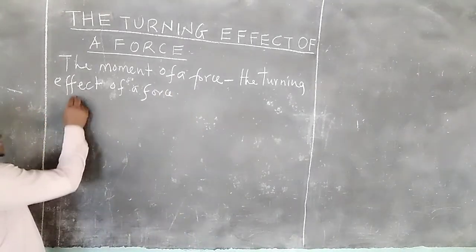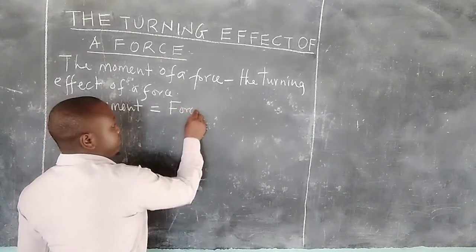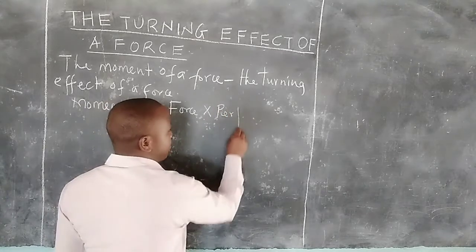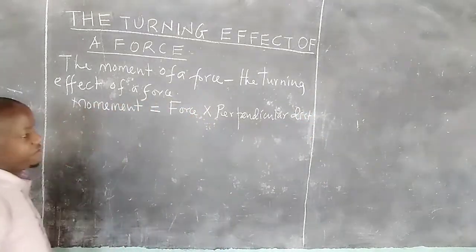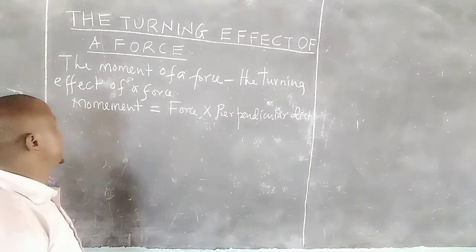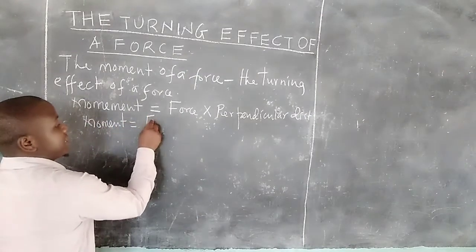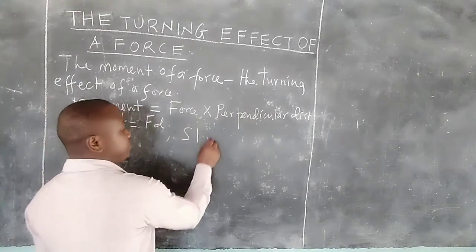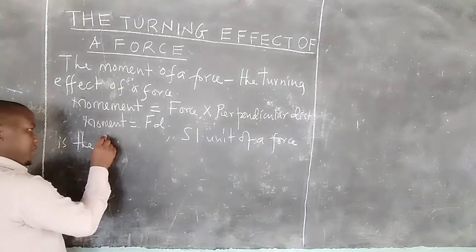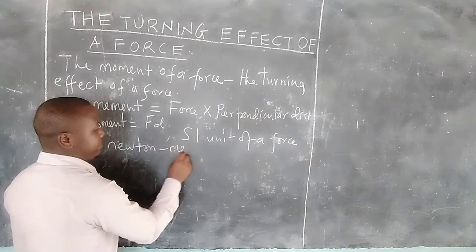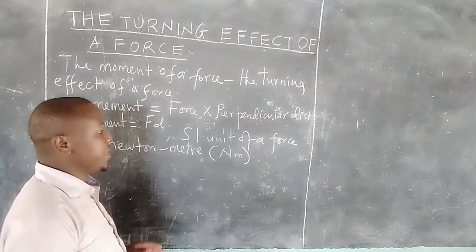The moment of a force can be calculated by the force times the perpendicular distance from the point of application of the force. Therefore, moment is given by force times the perpendicular distance. The SI unit of moment is the newton meter, because force is in newtons and distance is in meters.